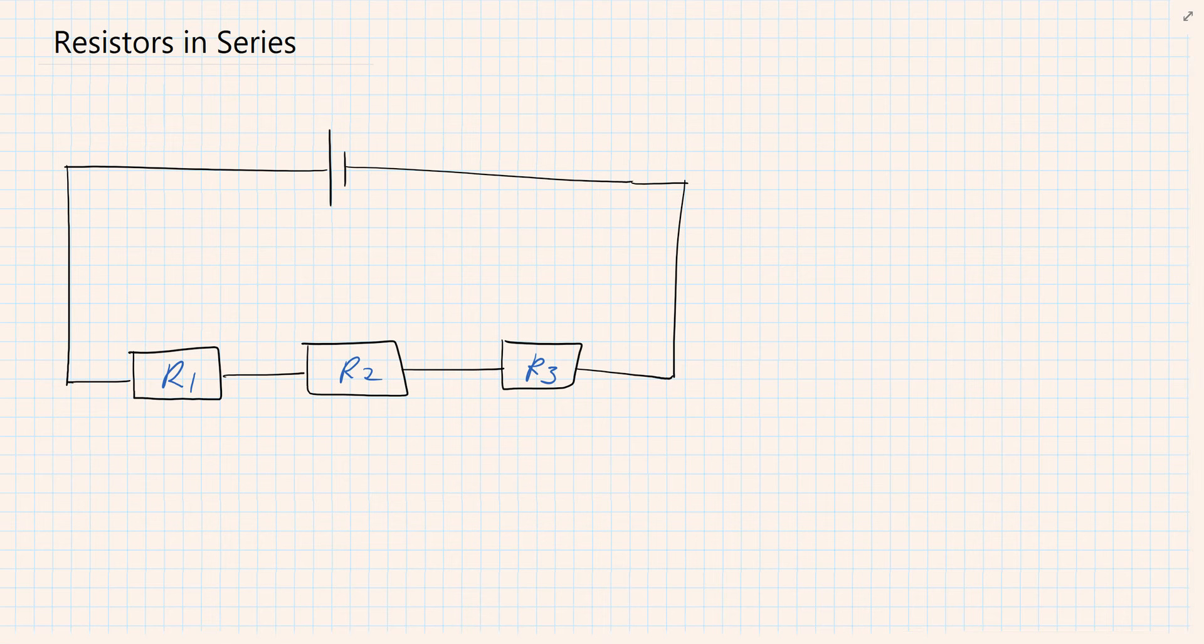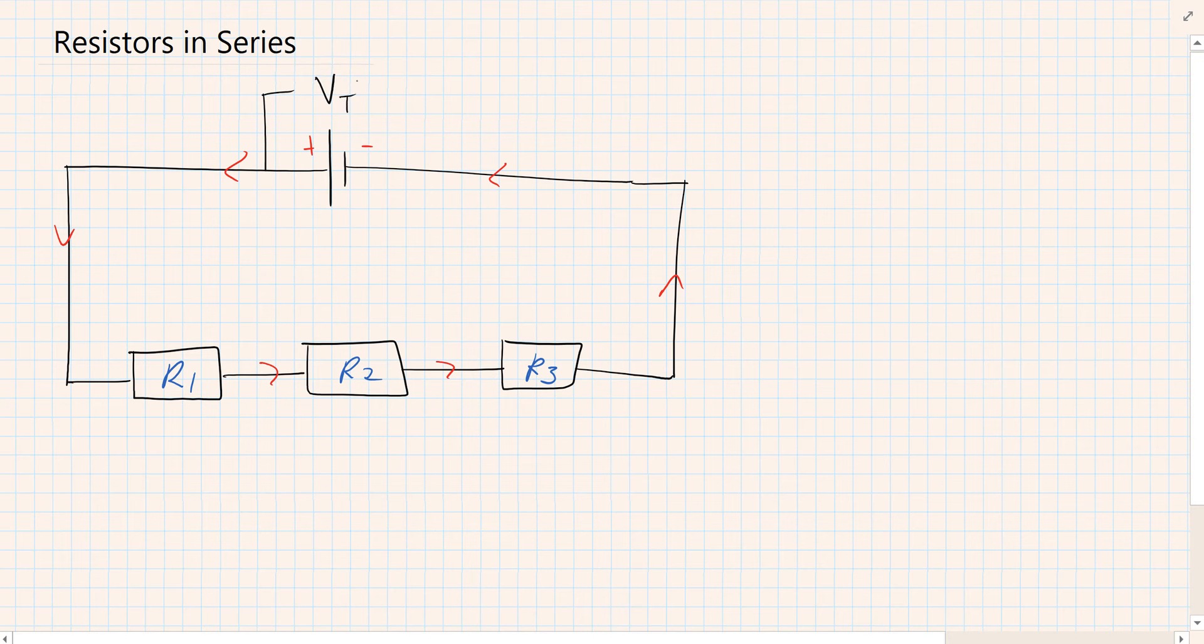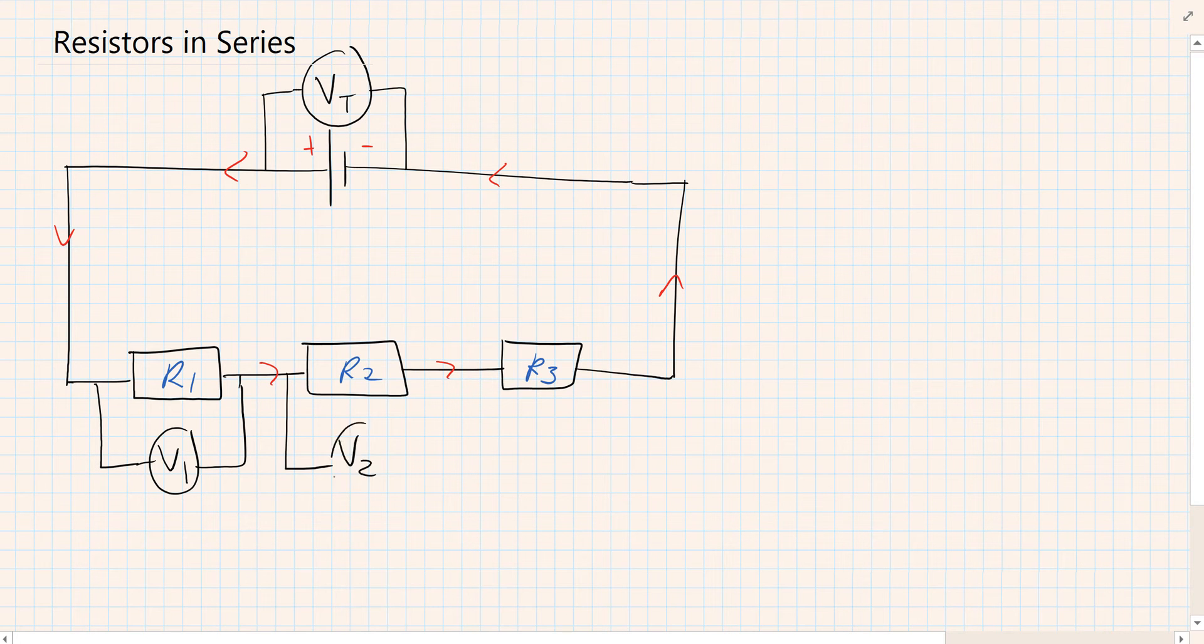Our power supply has positive and negative terminals, and we know that conventional current flows from positive to negative. If we put a voltmeter across the power supply, it will measure the total voltage. If we put a voltmeter across R1 we'll measure V1, across R2 we'll measure V2, and across R3 we'll measure V3.